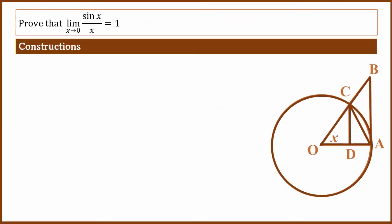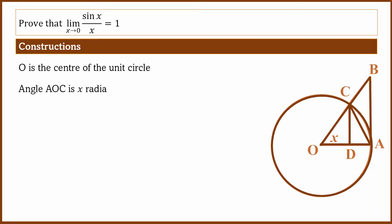If there is X, why is X? O is the center of the unit circle. Angle AOC is x radians.